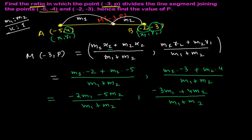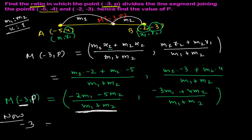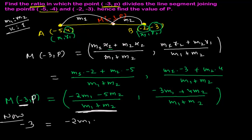We've got a useful trick here. We know that point M is (-3, p), so the x-coordinate is -3. Since we know the x-coordinate equals -3, we can equate it to our expression and easily find the ratio m1:m2. Once we have m1:m2, we can substitute to find p.